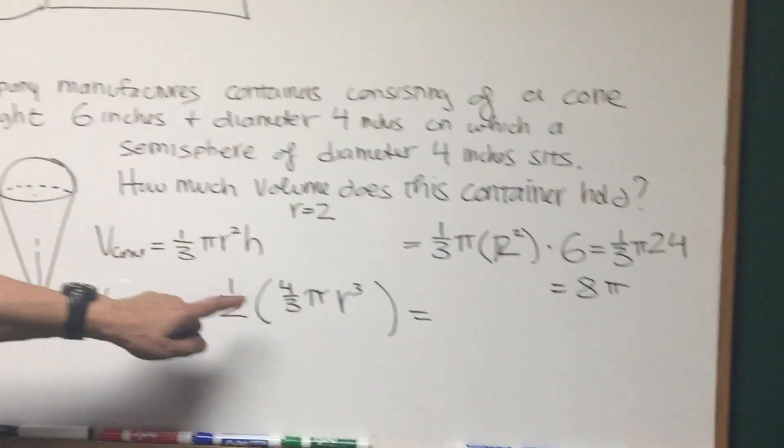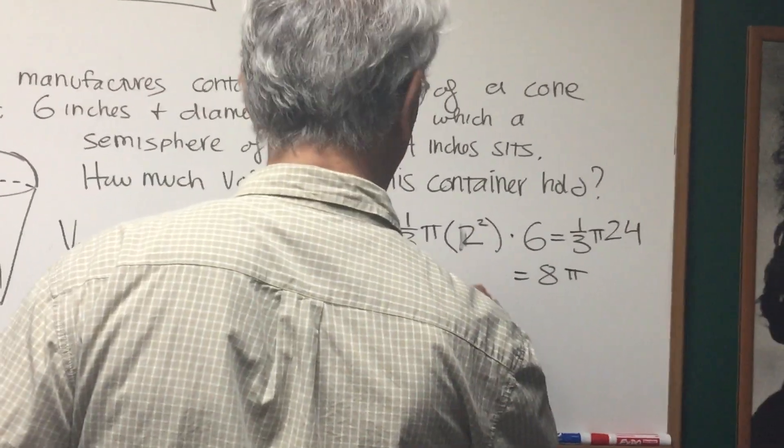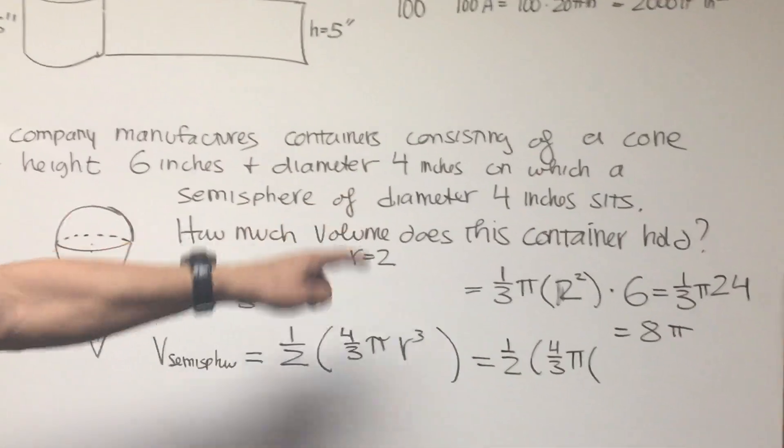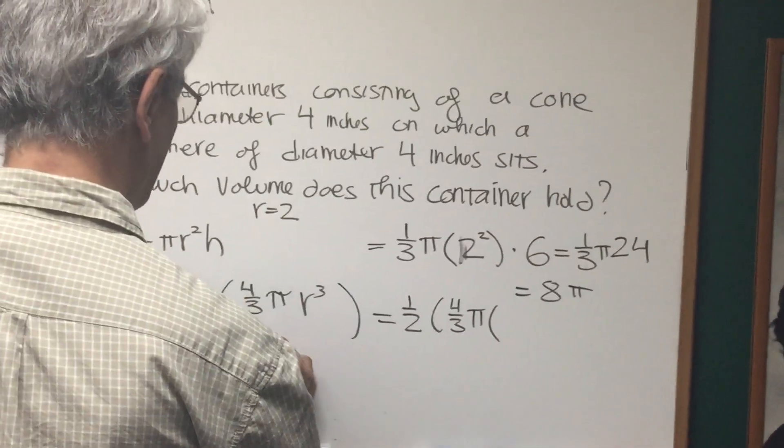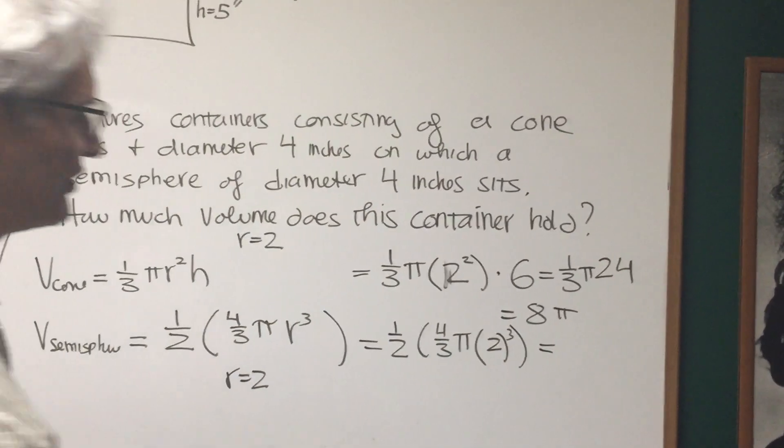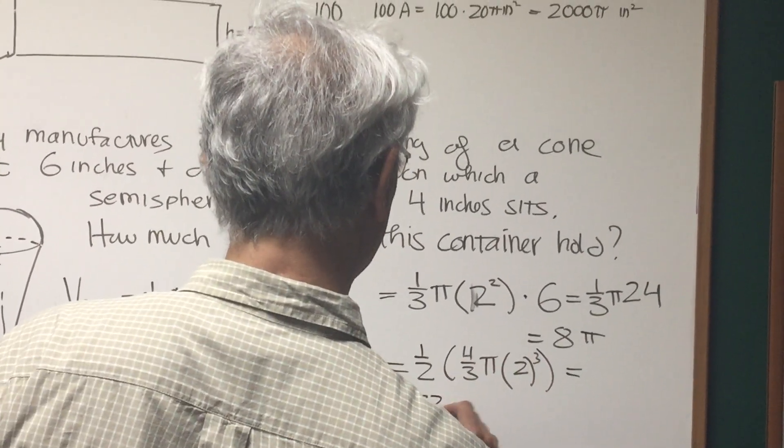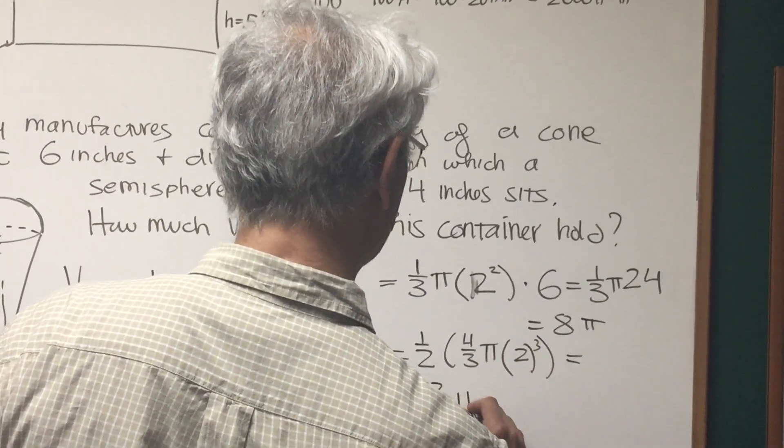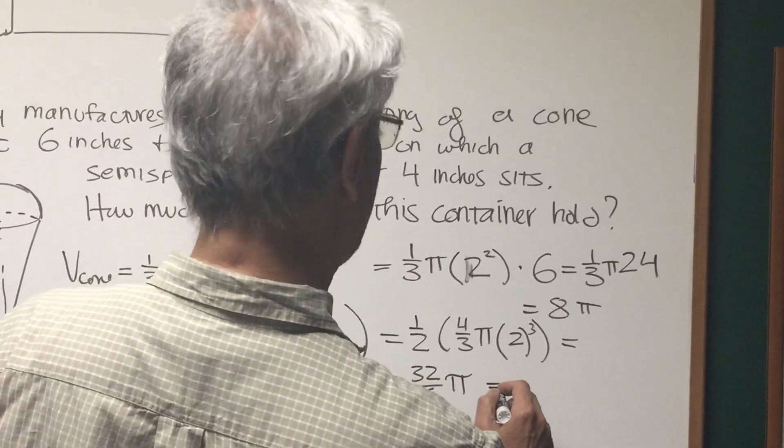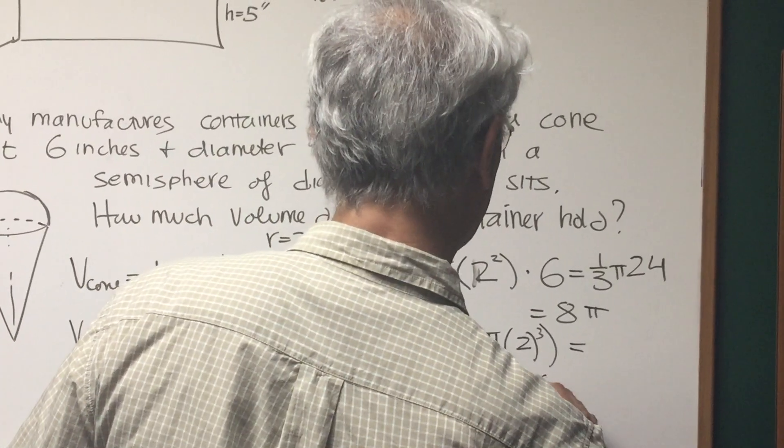And what about the volume of the hemisphere? Four-thirds πr³. That's going to be one-half times four-thirds π. Once again the diameter of the sphere is 4 inches, therefore its radius, once again is 2, so it's going to be 2³. And then this is going to be what? One, 8 times 4 is 32 over 6 times π, and that's going to be equal to, let's see, if we reduce that down, that's going to be 16/3 π.